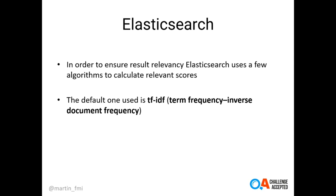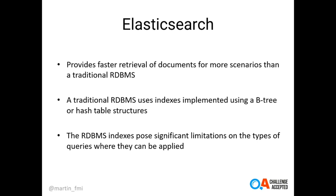In order to ensure relevancy, Elasticsearch uses a few algorithms to calculate the relevance score for a document. The relevance score determines how documents are returned by default from Elasticsearch. The default algorithm used is TF-IDF, or Term Frequency–Inverse Document Frequency, which provides two main criteria for determining how relevant a term is in a document: how many times the term occurs in the document, and how many times the term occurs across all currently indexed documents in the target index.